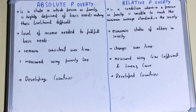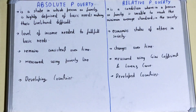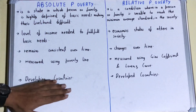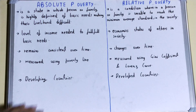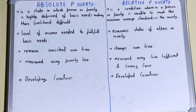In terms of measurement, absolute poverty is measured using the poverty line. Relative poverty is measured using the Gini coefficient and the Lorenz curve. In terms of where each is found, absolute poverty is found in developing countries, while relative poverty is found in developed countries.